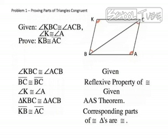And now, since we know that these two triangles are congruent, we can say that segment KB and segment AC are congruent because corresponding parts of congruent triangles are congruent.